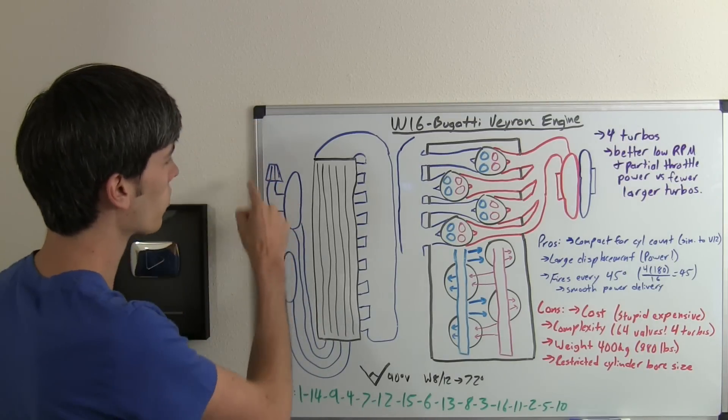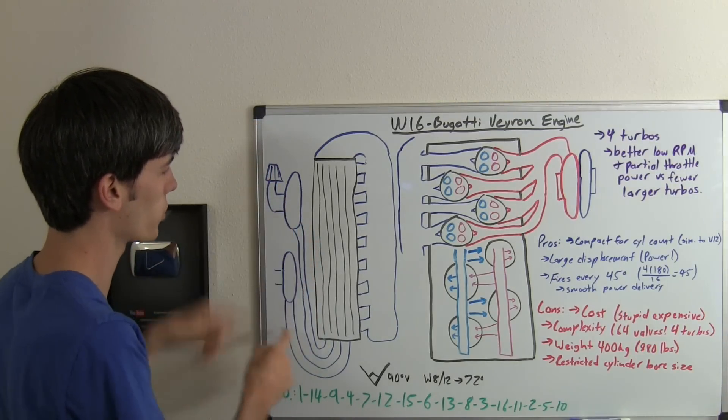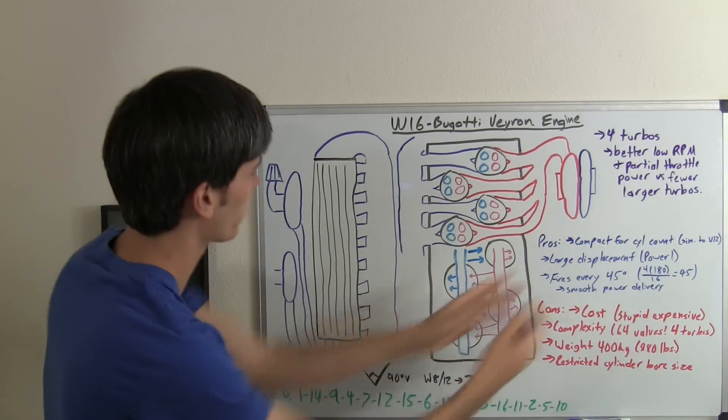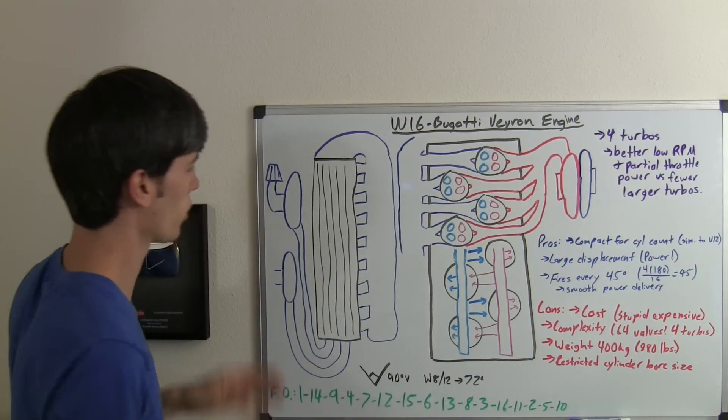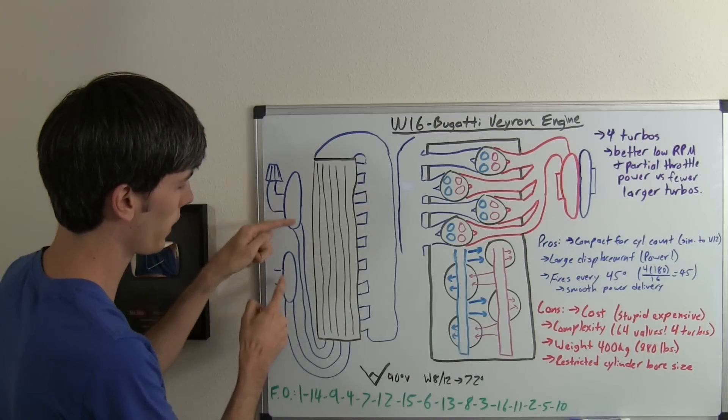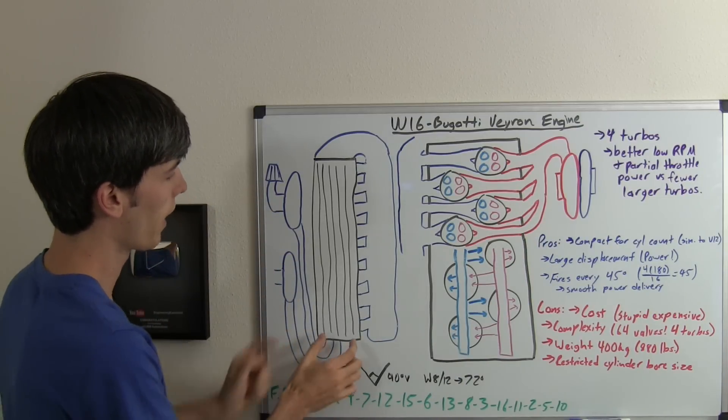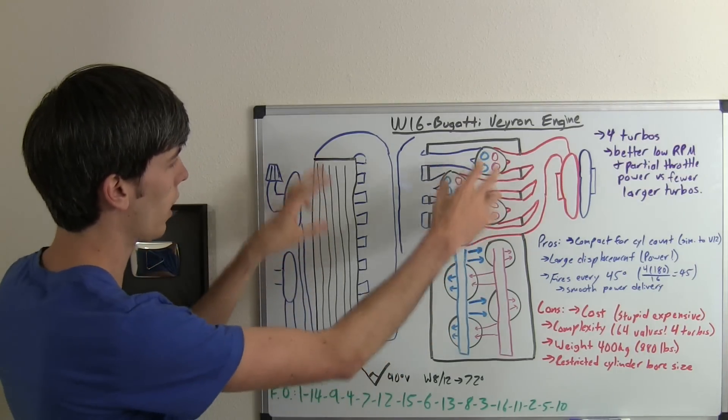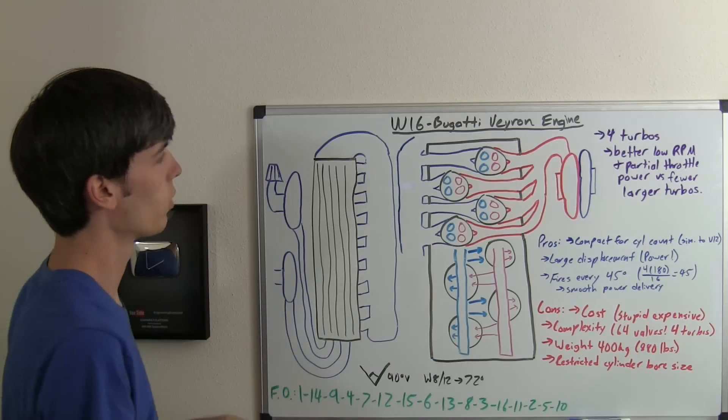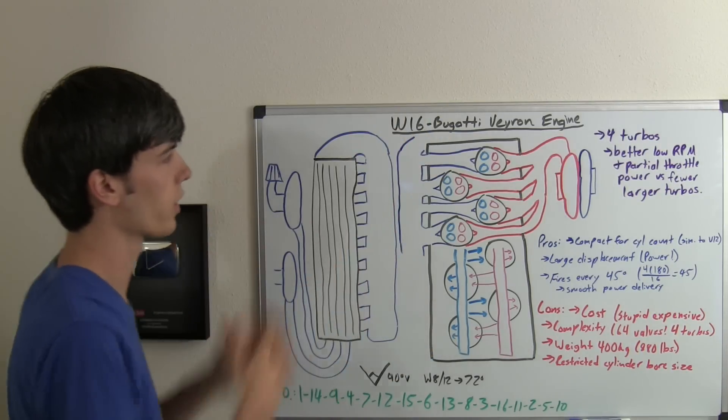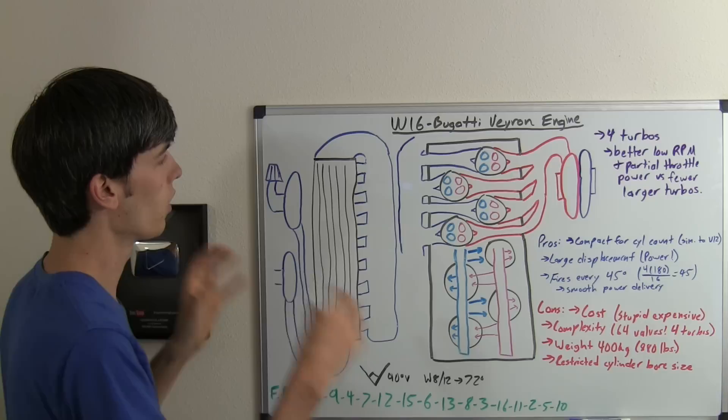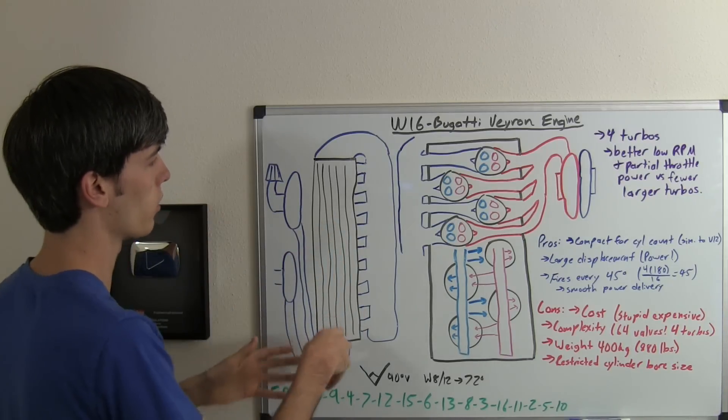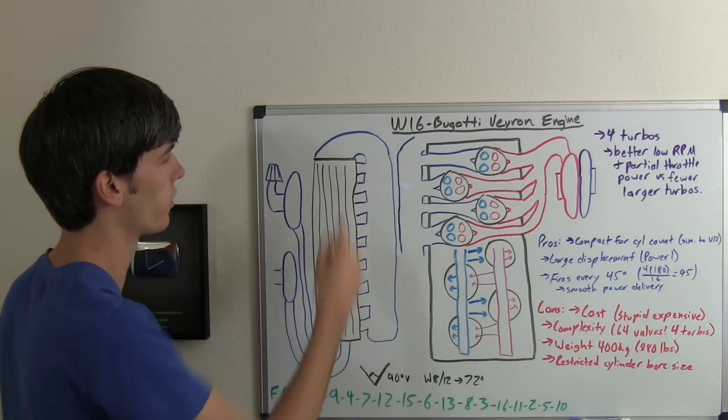We have our intake air going into the intake side of our turbocharger on both the left and right side of the engine. It'll pull in that intake air and feed it through this intercooler. This is an air to water intercooler, so these two intercoolers will have another radiator located somewhere else on the car, which cools down that liquid, which then cools down the air as it travels through.